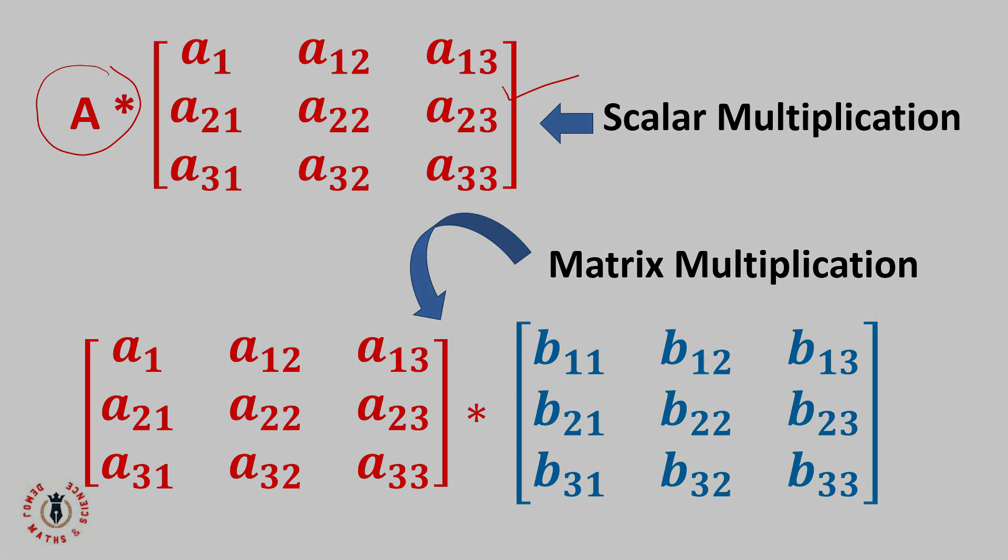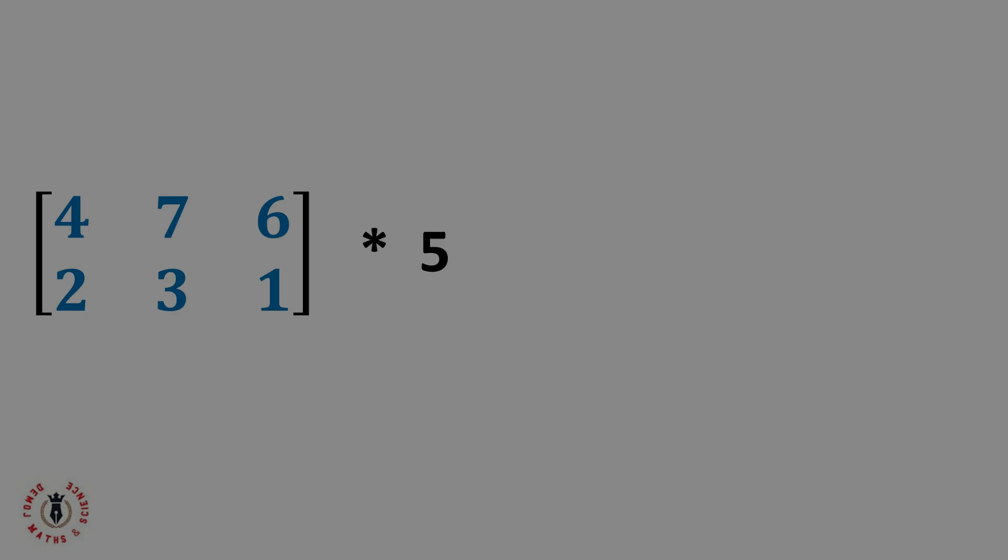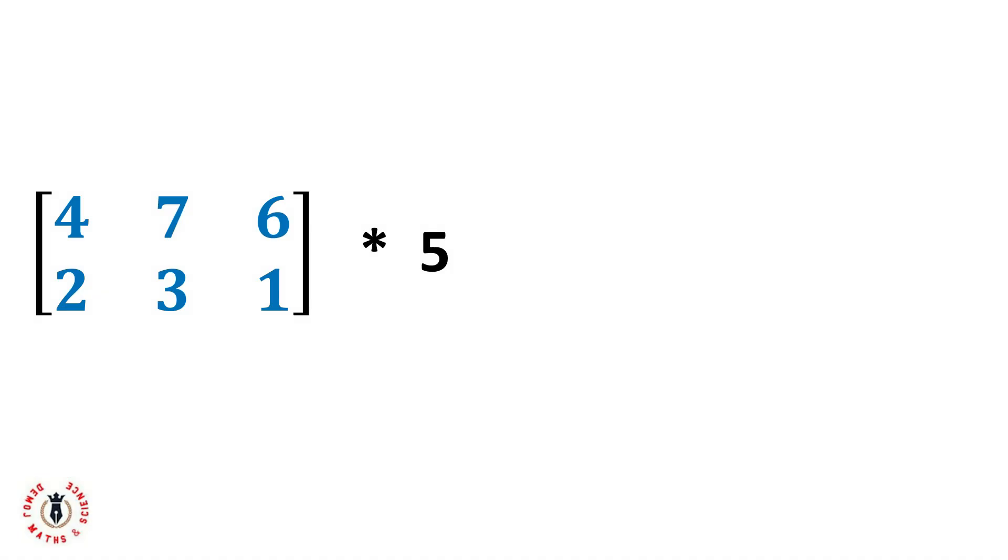Let's see scalar multiplication. Here is an example where I have a 2 by 3 matrix multiplying 5. What will I do in this case? You pick your 5 and multiply by each element in this matrix. My first element here will be 5 times 4. The second element will be 5 times 7. The third will be 5 times 6. Then the fourth will be 5 times 2. Then I'll have my 5 times 3, then 5 times 1.